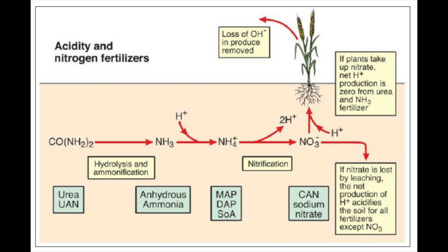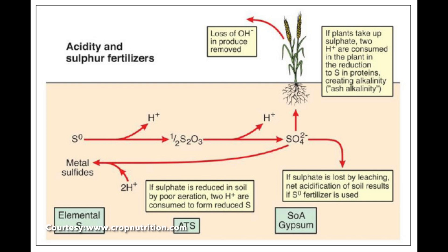If we are using elemental sulfur in our soil, or sulfate-based fertilizers, hydrogen is gained only if the sulfate is leached out. If it is absorbed by the plant, the net result is no change in pH. If sulfate is leached out, it gains positively charged hydrogen, so net acidity will increase — pH would decrease. Otherwise, there is no change in pH value.